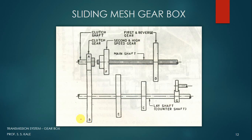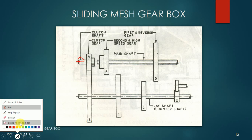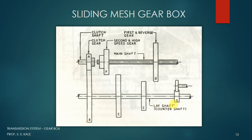Let's consider a sliding mesh gearbox and this particular figure, which is a line diagram for it. In this, you are finding three shafts. The first shaft is called the clutch shaft, the second shaft is called the main shaft, and the third shaft is called the lay shaft. The clutch shaft is also called the input shaft, the main shaft is called the output shaft, and the third is the lay shaft.